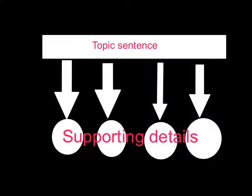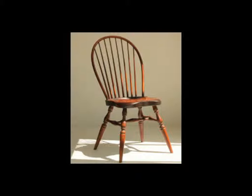Topic sentences are usually at the beginning or end of the paragraph. The sentences that are similar to each other are called supporting details, because they provide details that go along with or support the topic sentence — much like the legs of a chair support the seat.